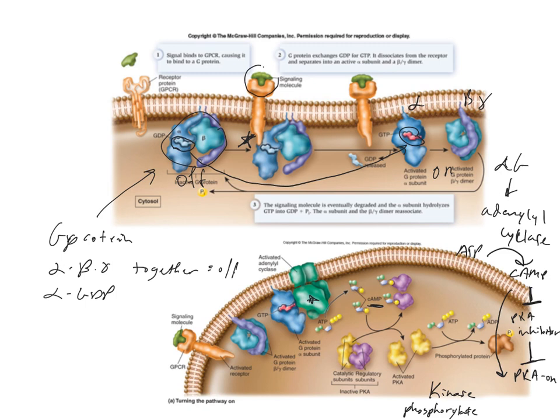After a while, this system will turn itself back off. The GTP by default will turn back into GDP, and that causes all three alpha, beta, and gamma subunits to come back together, turning the system off again. But if you have more ligand present, it will turn right back on and continue until the ligand is gone, at which point the default pathway turns itself off once again.